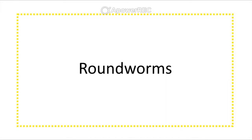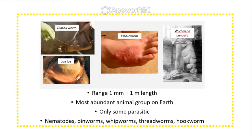Roundworms are the most abundant animal group on Earth. We discussed several, including the guinea worm, loa loa worm, hookworm, and Wuchereria bancrofti. Only some are parasitic — these include nematodes, pinworms, whipworms, threadworms, and hookworms. They can range from one millimeter to one meter in length.